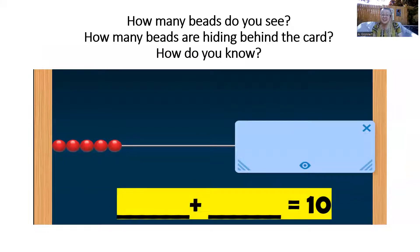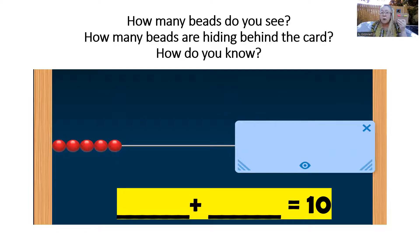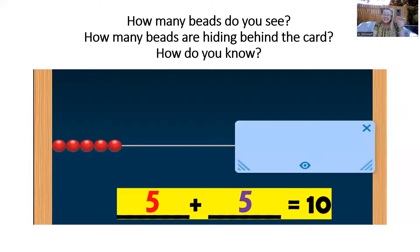Look at the number rack in the picture. How many beads do you see? Make that number of beads on your number rack. Now, how many more beads do you need to make 10? How many beads are hiding behind that card? If I move my fingers off of those, you can see. Yes, that's right. There are five more beads, and you know because you made it on your number rack. Maybe you counted, or maybe you just knew. We can represent this number combination with the equation five plus five equals 10. Let's say that again together: five plus five equals 10.